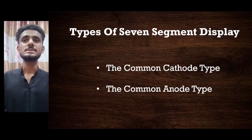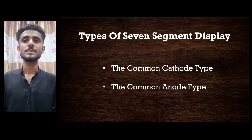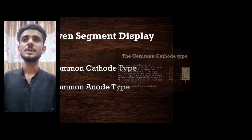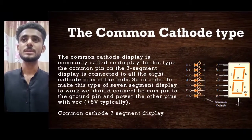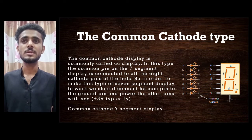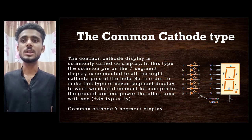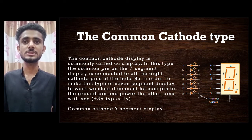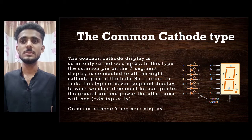Types of seven-segment display: the common cathode type and the common anode type. The common cathode (CC) display has a common pin connected to all eight cathode pins of the LEDs. In order to make this type work, we connect the common pin to ground and power the other pins with VCC, typically plus 5V.